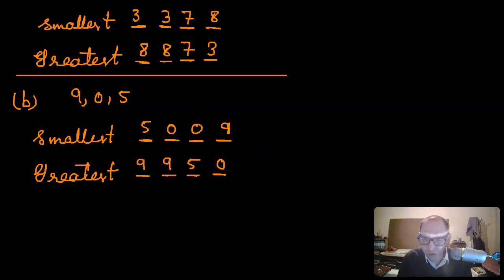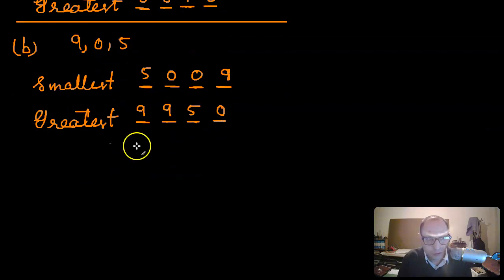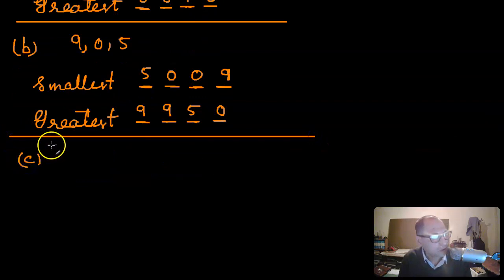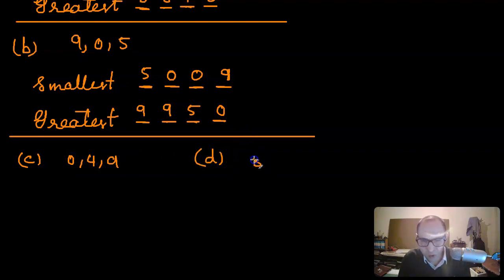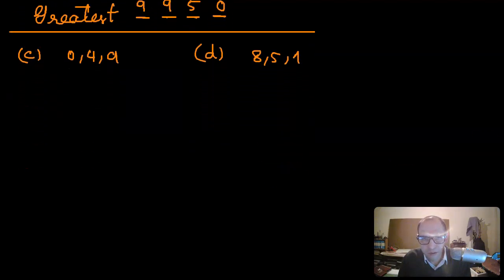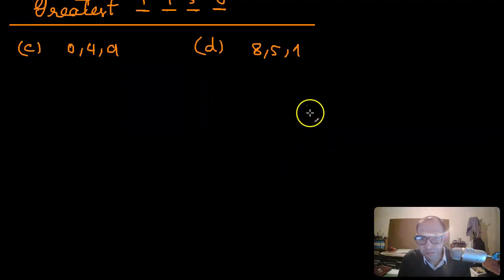You can try the rest on your own. Part C: the digits are zero, four, and nine. Part D: the digits are eight, five, and one.